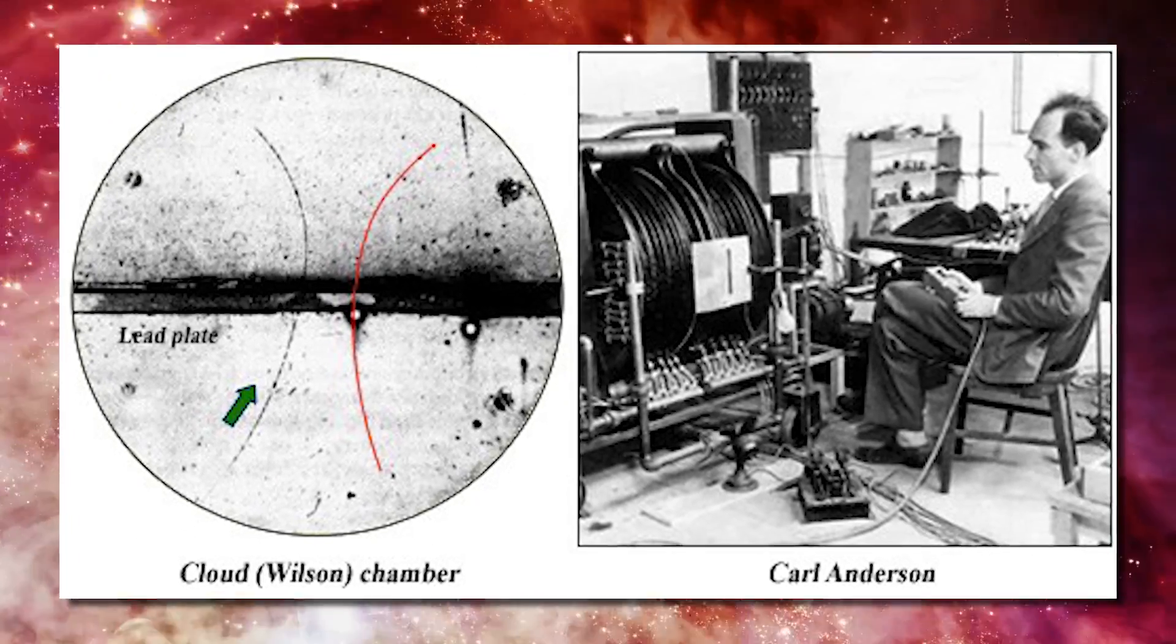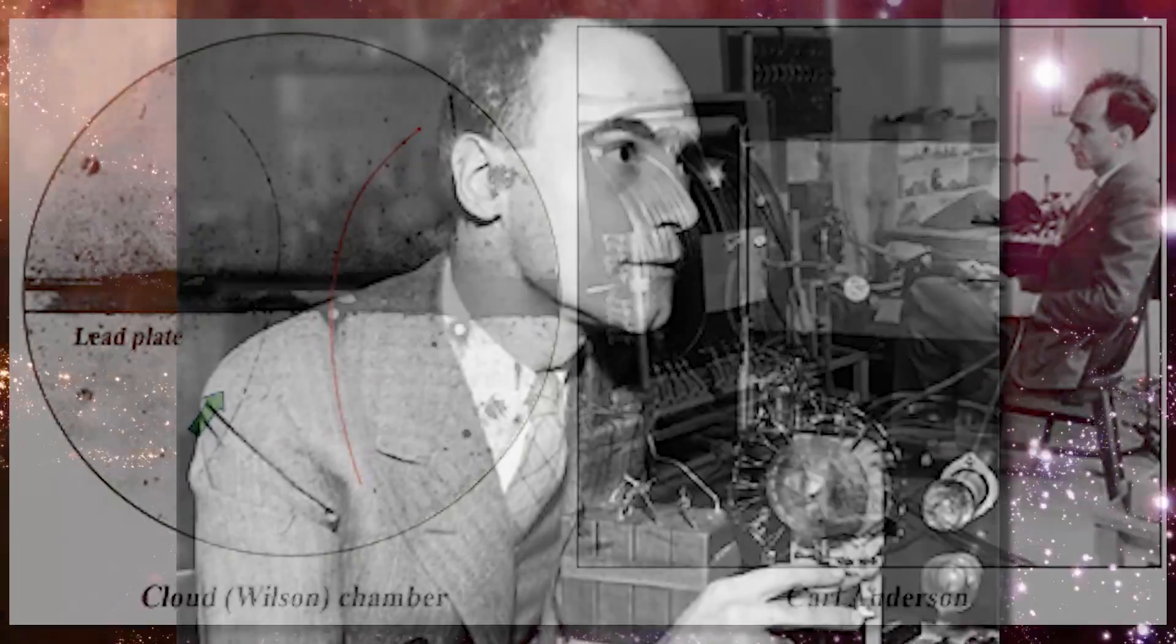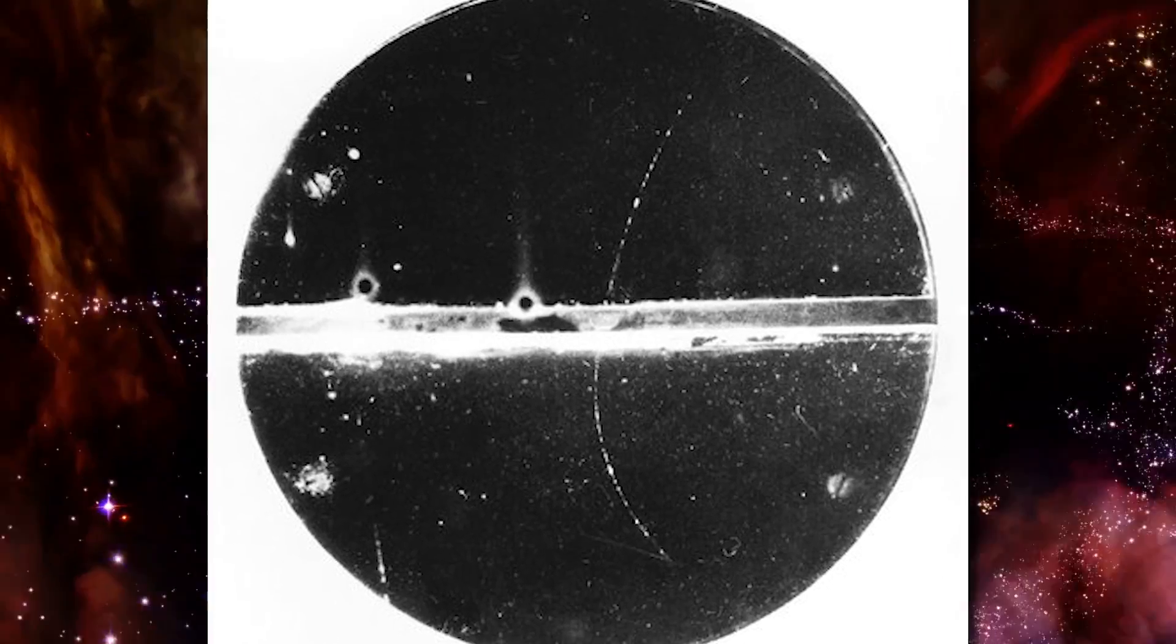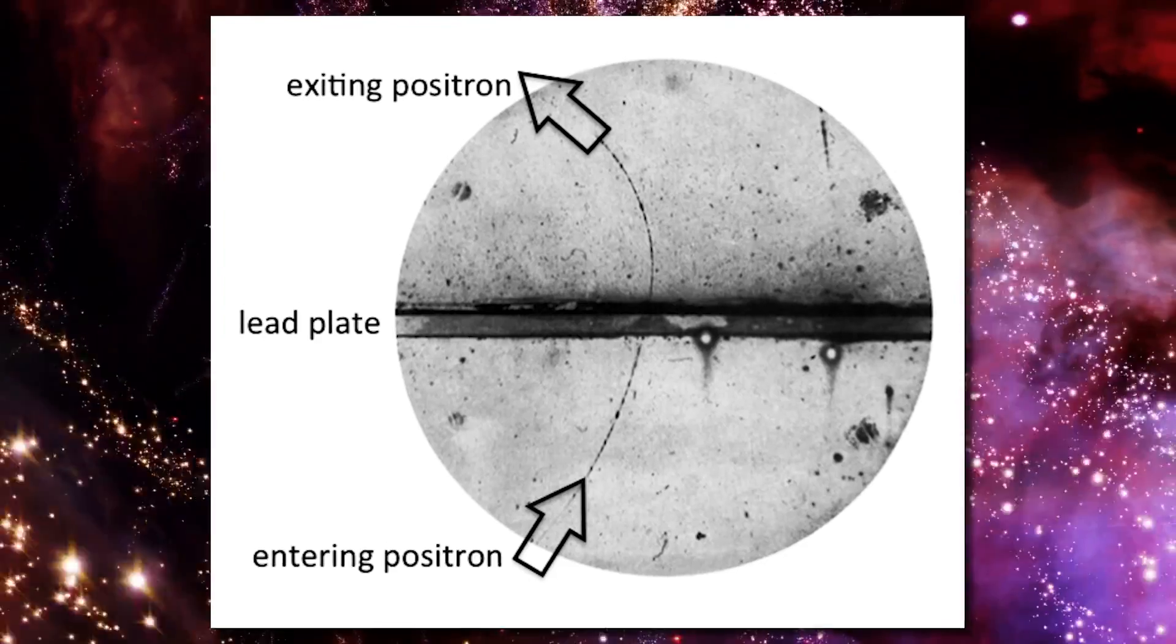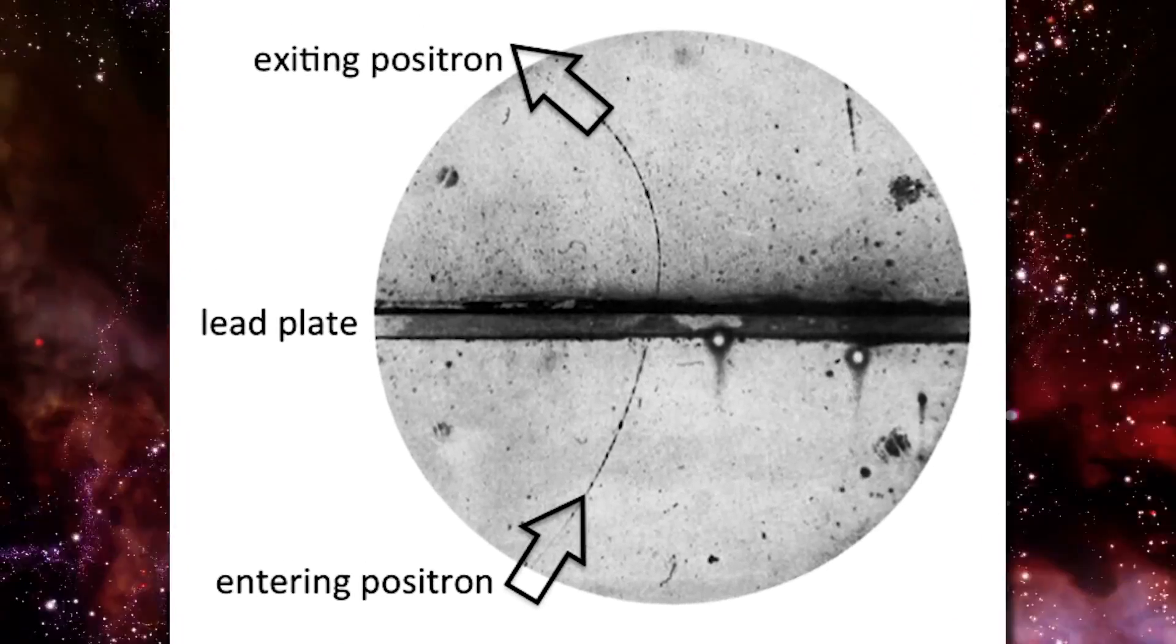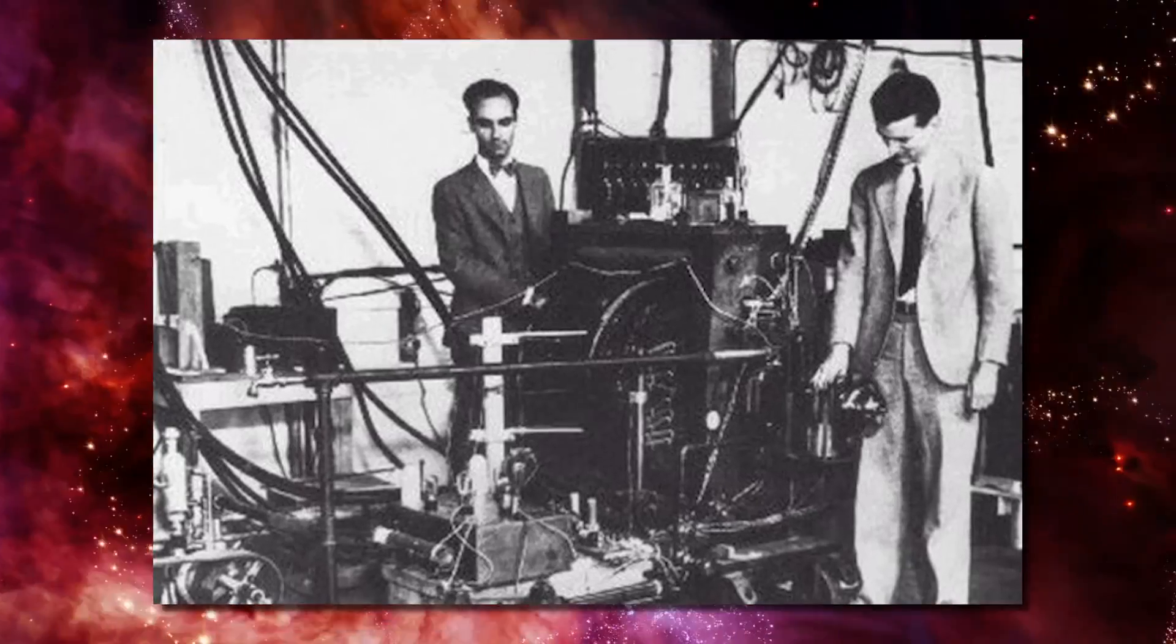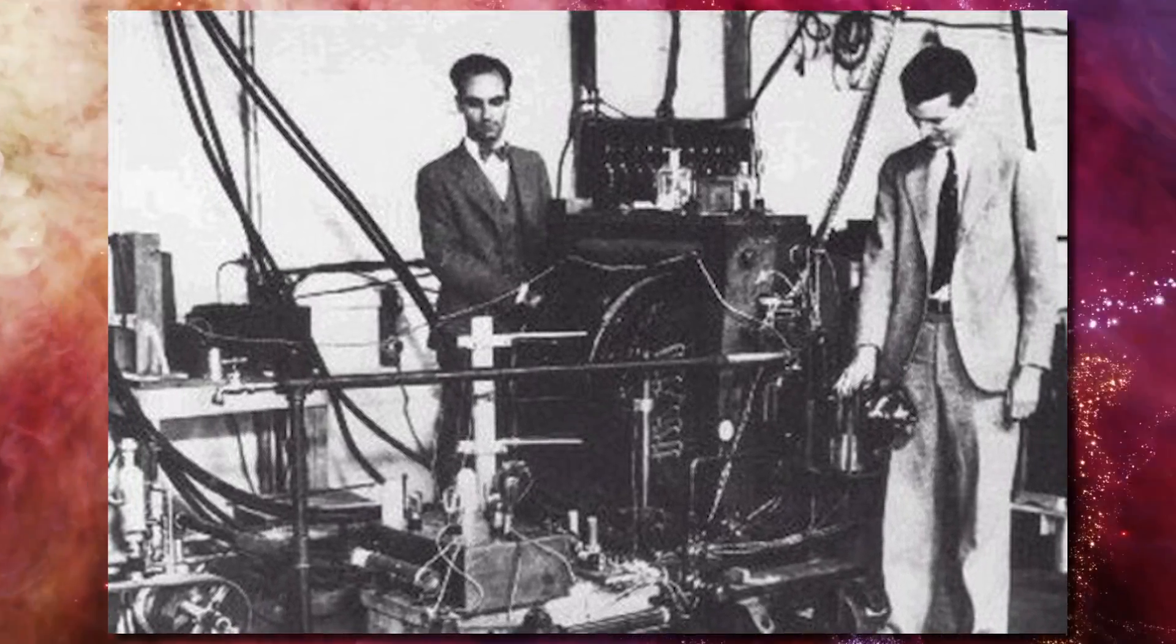The device used by Anderson is called a cloud chamber and was a standard instrument used in nuclear physics labs at the time. A particle going through a cloud chamber would leave sort of a trail of bubbles in its wake. Applying a known magnetic field would curve the particle according to its charge. The positron in Anderson's cloud chambers curved in exactly the same way as electrons, but in the opposite direction.